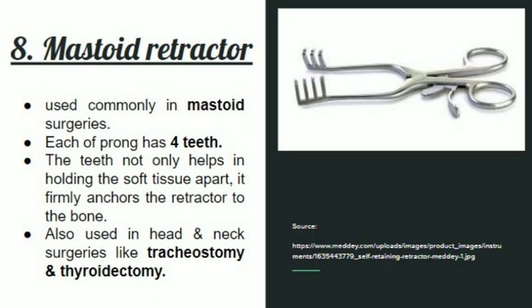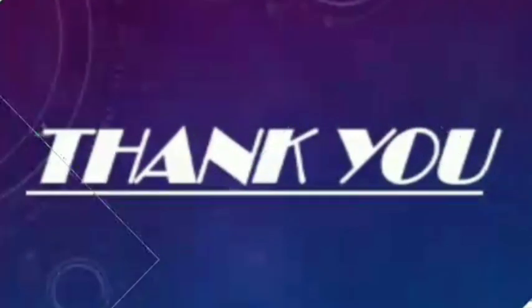The last retractor is the mastoid retractor. It has two blades, each with four teeth. The teeth not only help in holding the tissue apart but also firmly anchor the retractor to the bone. It is used most commonly in mastoid surgeries and can also be used in tracheostomy and thyroid surgeries. Thank you.